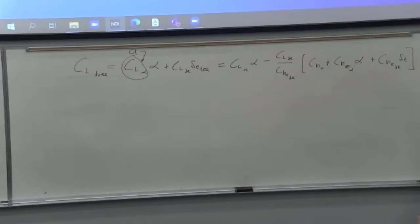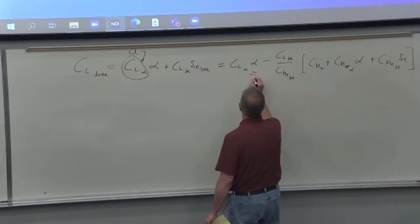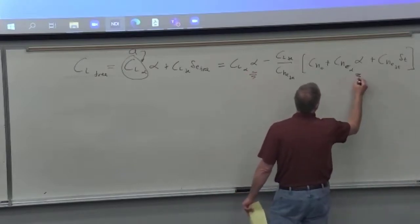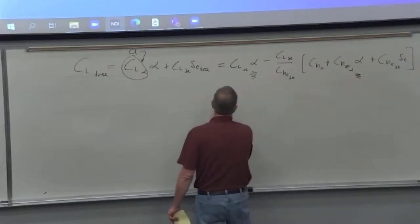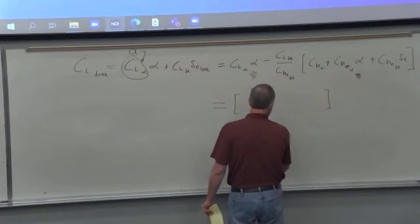So that's our lift equation with the elevator free. So now the CL doesn't depend on elevator because the elevator floats to wherever trim tab tells it to float to, and alpha tells it to float to. So this is our new lift equation. And we look at this and we go, okay, here is alpha, but then there's another term that depends on alpha. And our normal process is to collect the terms that don't depend on alpha and the ones that do.